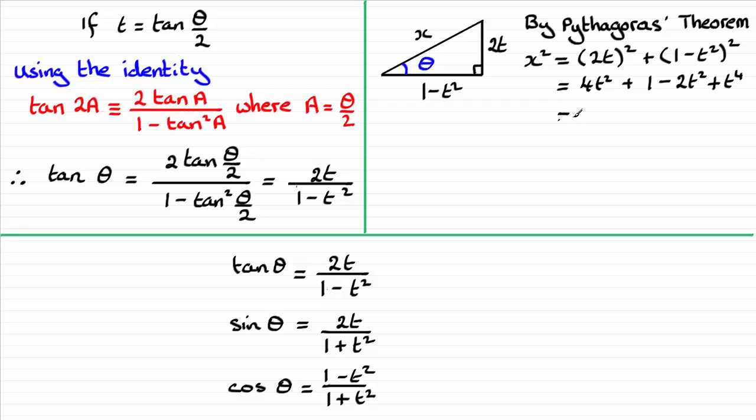And grouping this up, we've got 1 plus 2t squared plus t to the power 4. And this factorizes to all of 1 plus t squared all squared.